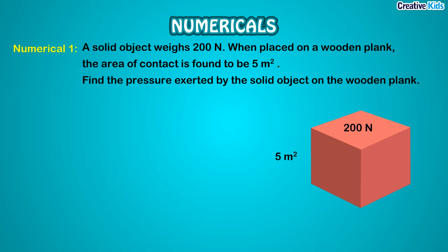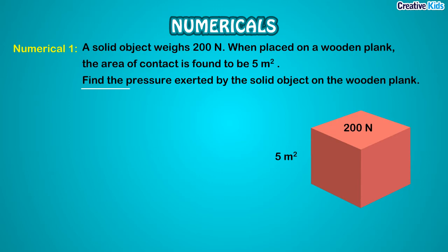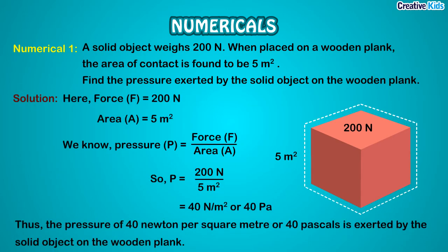Read the numerical 2-3 times and try to write what is given. We have a solid object weighing 200 N placed on a wooden plank with an area of contact of 5 m². What is given: Force F = 200 N.